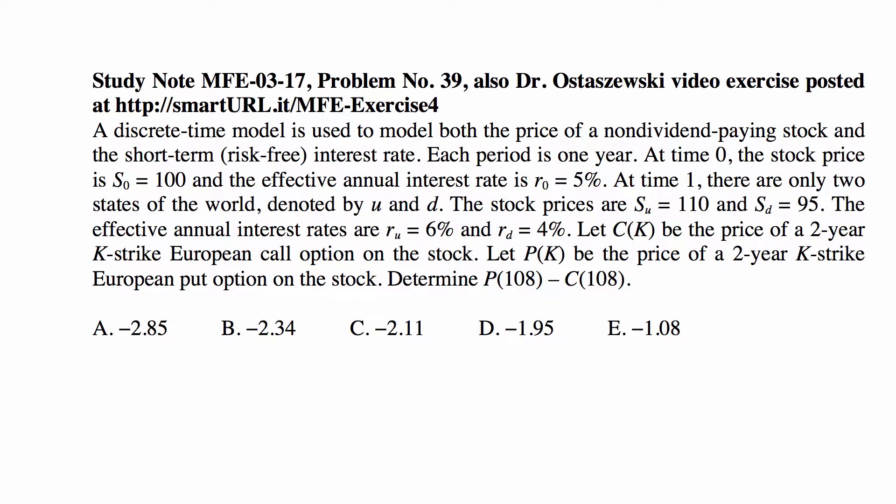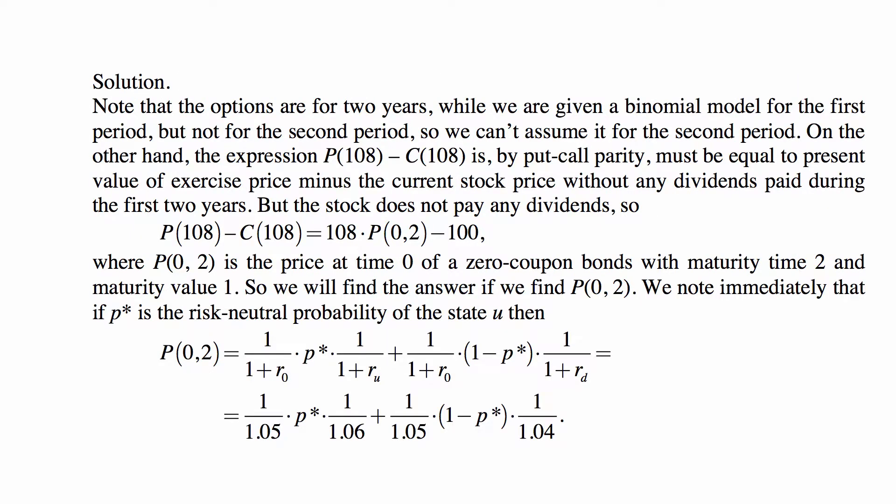The important thing to note is that the options are for two years while we are given binomial model for the first period, but not for the second period. So we can't assume it for the second period. We don't really know what's going to happen there.